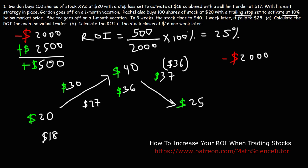In the case of Gordon, his stop-loss doesn't move above $18. It remains at $18. So it's going to sell his shares once the price of the stock hits $18 or below.